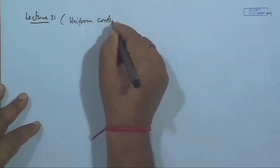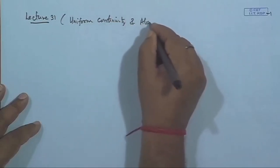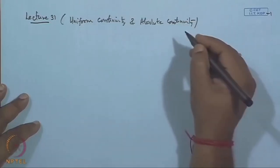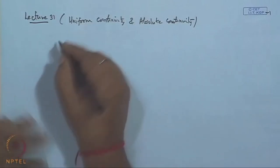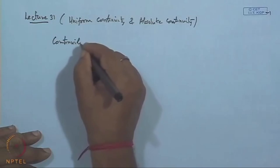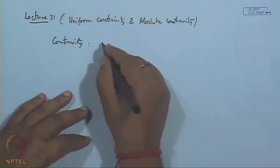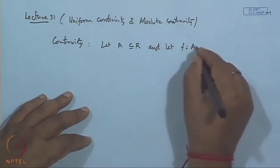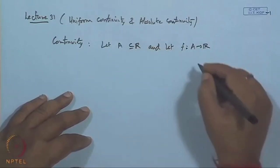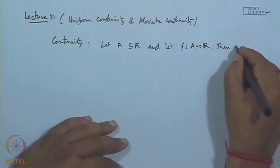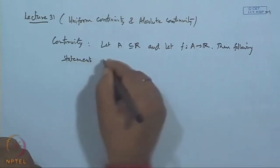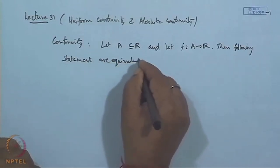Today we will discuss uniform continuity and absolute continuity. Let us see the first: uniform. We have already seen the continuity definition. If we let A, which is a subset of R, and let f be a mapping from A to R. Then the following two statements are equivalent.